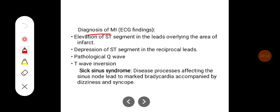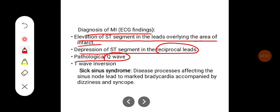The diagnosis of myocardial infarction can be done by elevation of ST segment in the leads overlying the area of infarction and depression of ST segment in the reciprocal leads. Pathological Q wave also indicates the presence of old infarction, and T wave inversion as well.